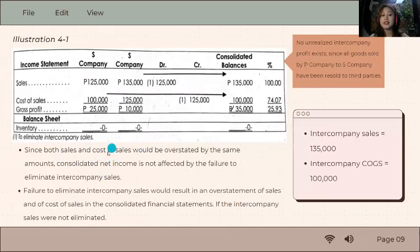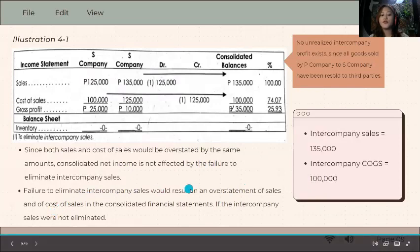What will be overstated is the sales and cost of sales. So net income is not affected by the failure to eliminate intercompany sales. What happens is overstatement of sales and overstatement of cost of goods sold.